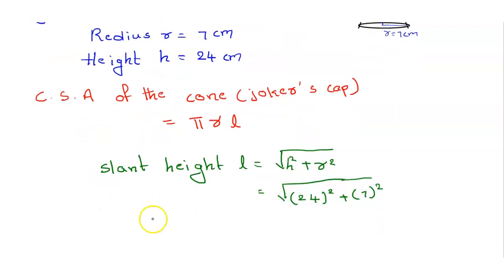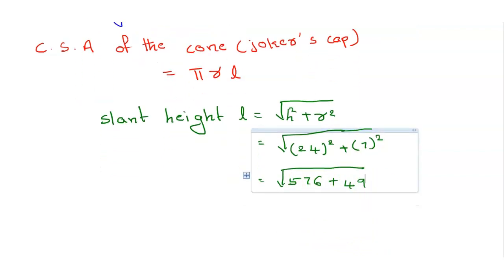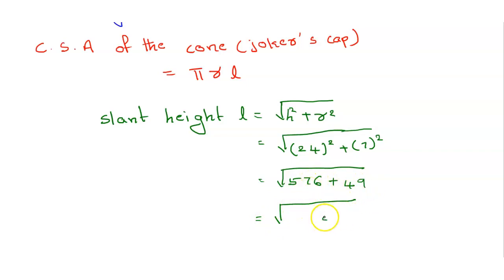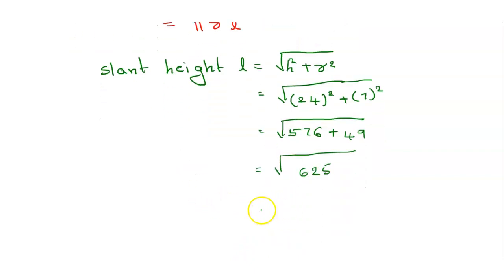24 squared is 576, plus 7 squared is 49. Adding both: 576 plus 49 equals 625. The square root of 625 is 25, so the slant height l is equal to 25 centimetres.